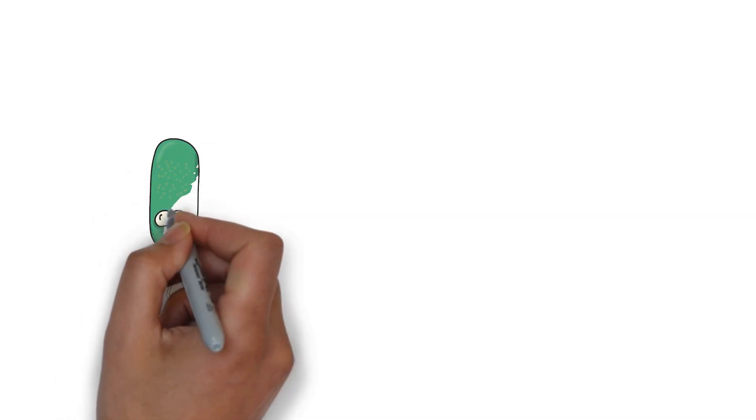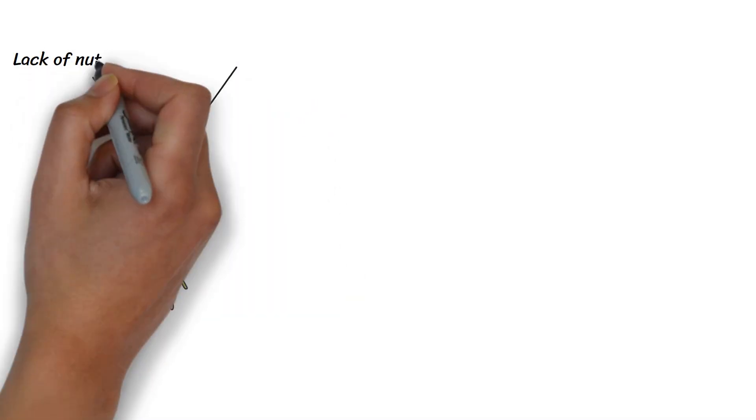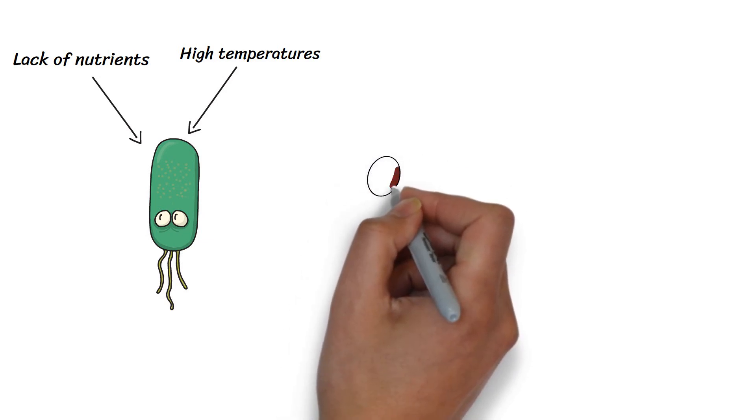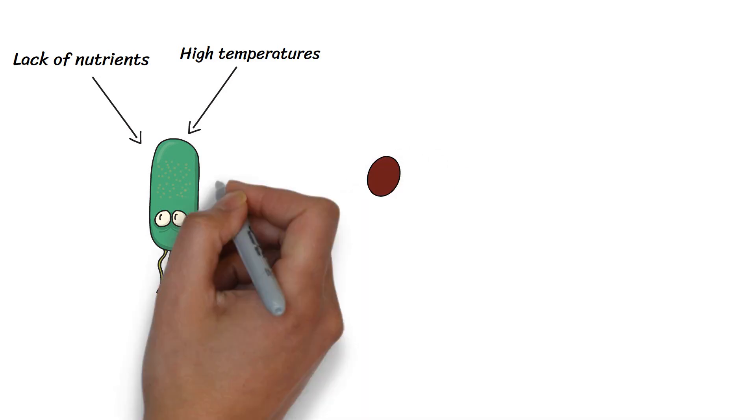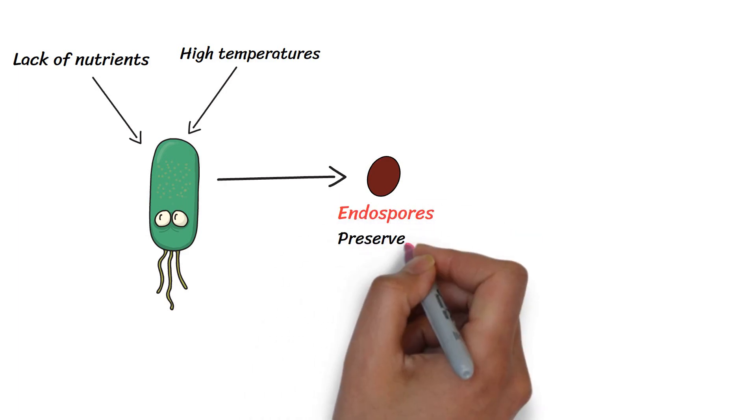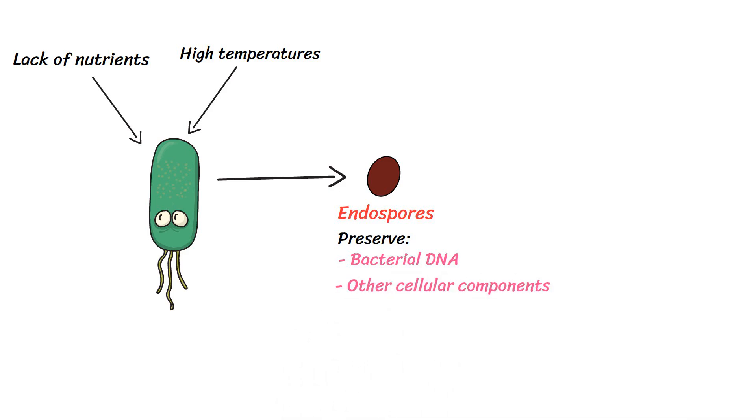When bacterial growth is ceased by unfavorable environmental conditions like lack of nutrients and high temperatures, it employs a survival strategy by producing structures within the cell called endospores. These endospores preserve the bacterial DNA and other essential cellular components during these tough conditions.